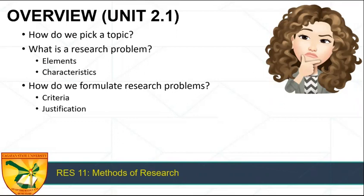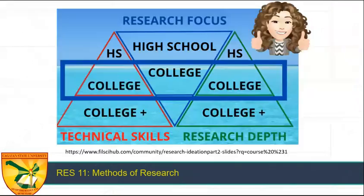We will look at how do we pick a topic, what is a research problem, its elements, characteristics, how could we formulate research problems, its criteria, and how to justify the choice of the research problem.